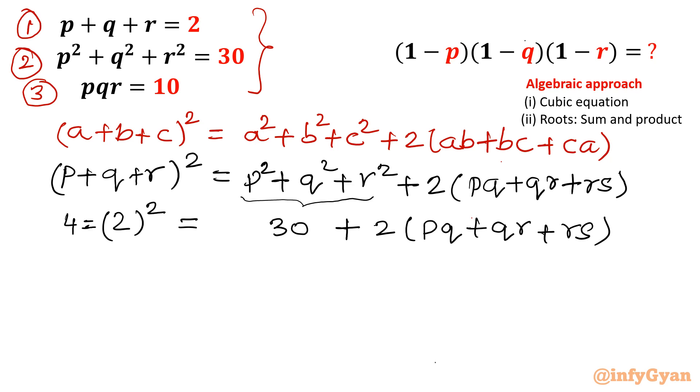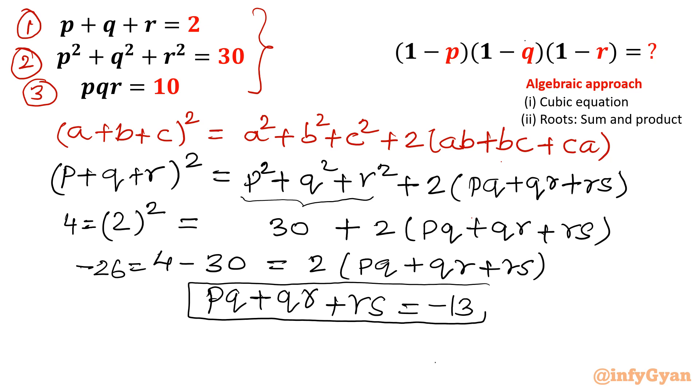So 4 minus 30 will be equal to 2(pq plus qr plus rs). So it is minus 26. Divide both sides by 2. So directly I am writing pq plus qr plus rs is equal to negative 13 and this equation we will call equation 4.